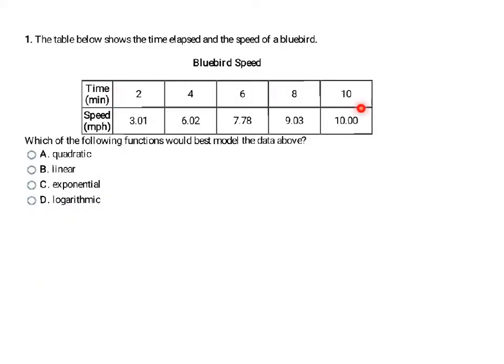This problem gives us a table showing the time elapsed and the speed of a bluebird, and it wants to know which model — quadratic, linear, exponential, or logarithmic — would be the best fit if graphed. I'm going to calculate the differences first: 6.02 minus 3.01 gives me 3.01, and then 7.78 minus 6.02 gives me 1.76. Right away I see it's not going to be linear, but I'll keep going to calculate the second difference too.